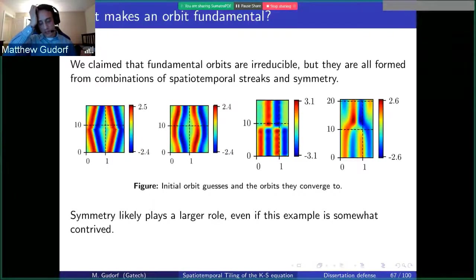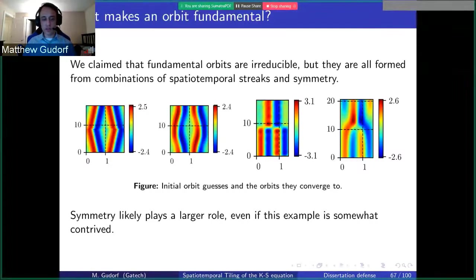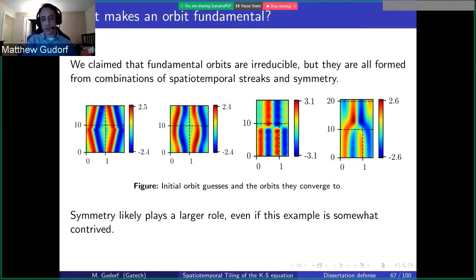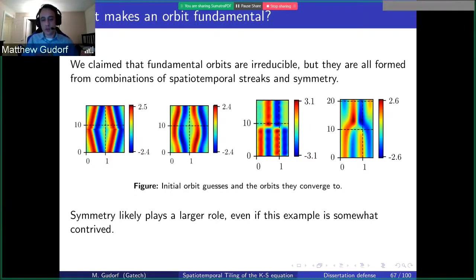I'm claiming these orbits are fundamental, but in terms of the actual spatiotemporal patterns, they're all made of streaks — wavelengths combined with symmetry. If you take the streaks and impose some slant towards them, making them converge towards each other, you can find the spatiotemporal wiggle. This is literally taking the one-wavelength equilibrium solution and manipulating it to find the other fundamental orbits. Likewise, put two wavelengths next to each other, put one wavelength on top, and you can find the defect.